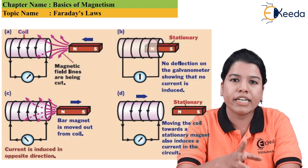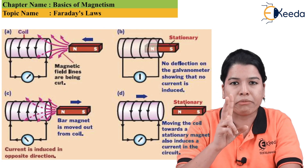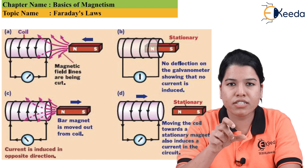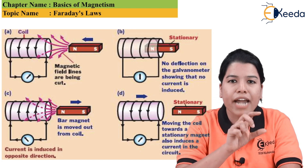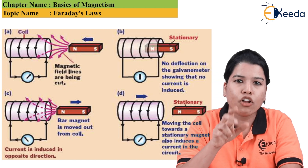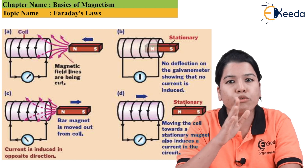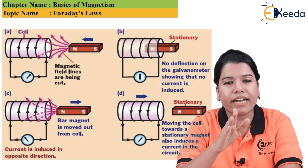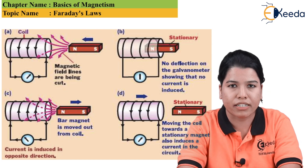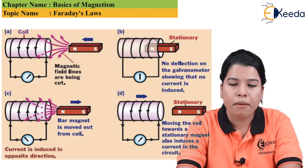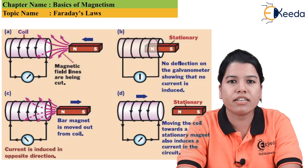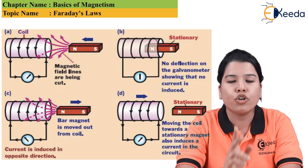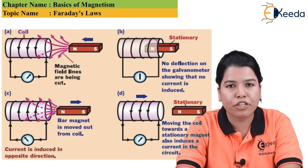So here there are two requirements: first, either a stationary magnet and moving coil, or a moving magnet and stationary coil. By conducting this experiment, Faraday introduced two laws of electromagnetic induction.